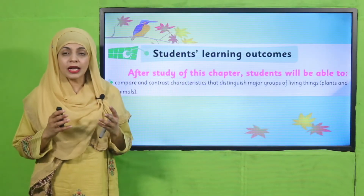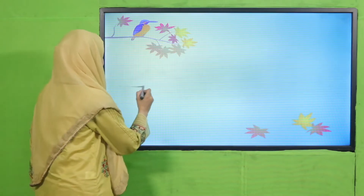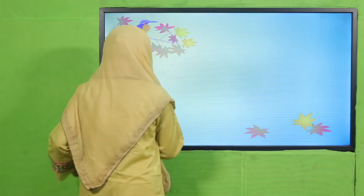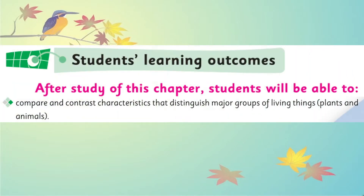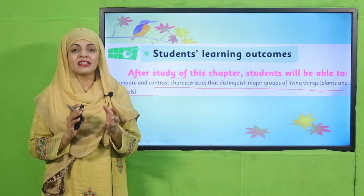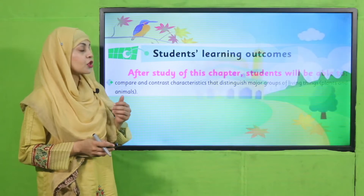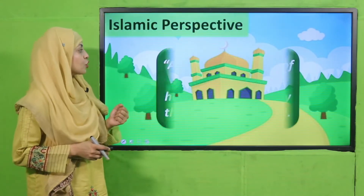Today's student learning outcome: students will be able to compare and contrast characteristics that distinguish major groups of living things — plants and animals. Today we are going to make a project on the characteristics of plants and animals, specifically on growth.